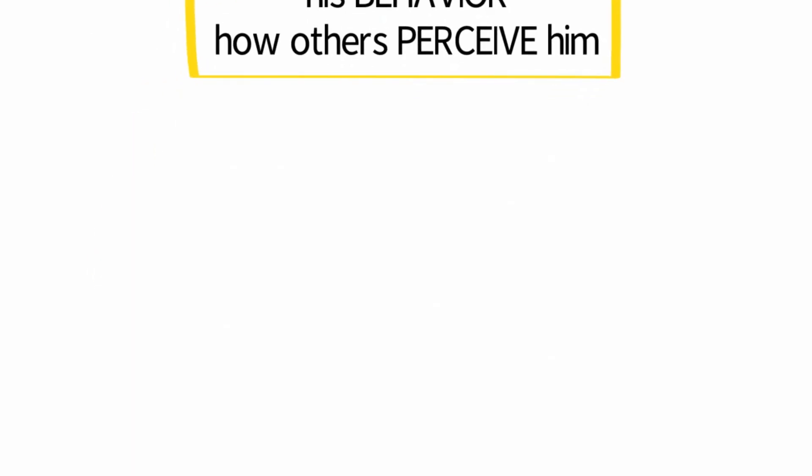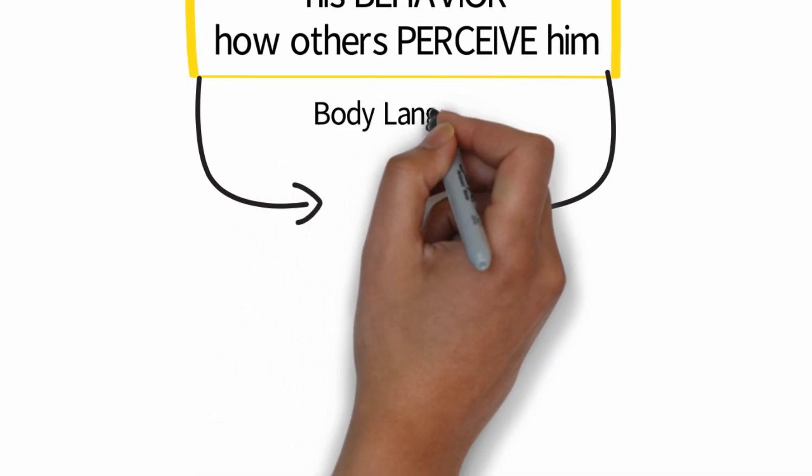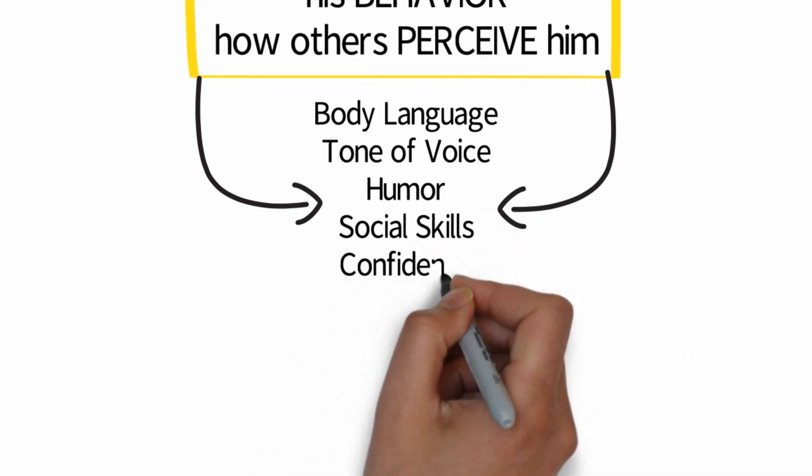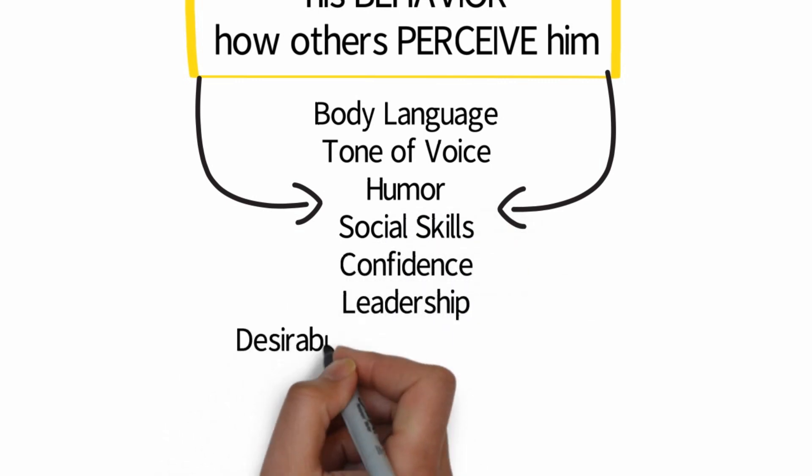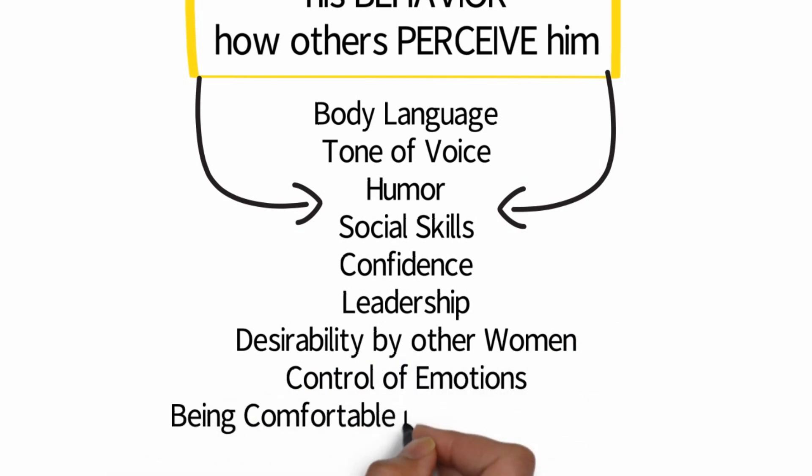To be more precise, let's make an accurate list on what women find attractive to men: body language, tone of voice, humor, social skills, confidence, leadership, desirability by other women, control of emotions, and being comfortable in your environment.